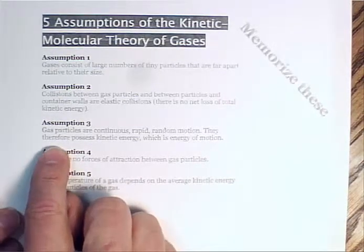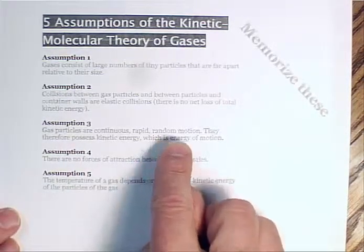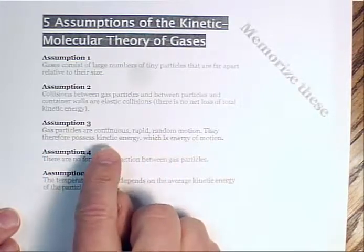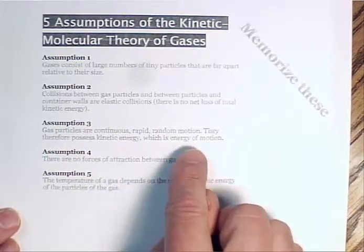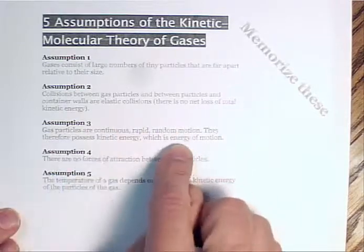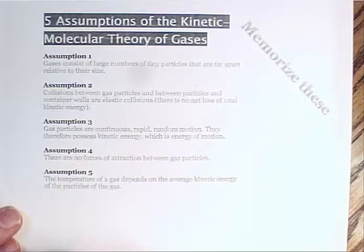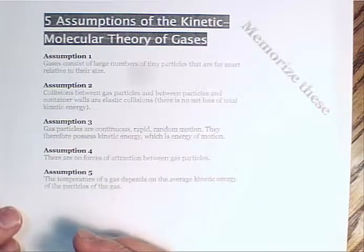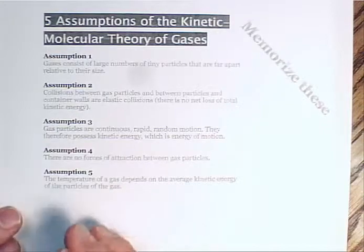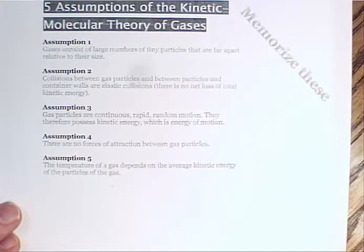Gas particles are in continuous, random, rapid motion. They therefore possess kinetic energy, which is energy of motion. And this is a definition of temperature. Temperature can be defined as the average kinetic energy in a substance, or more correctly, the average random momentum of the particles in a substance.